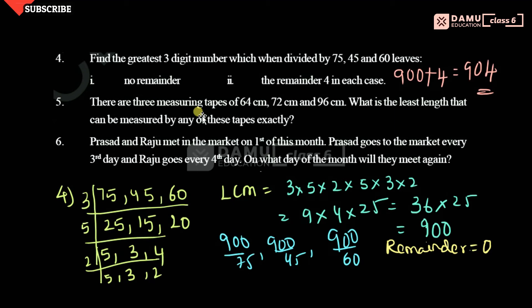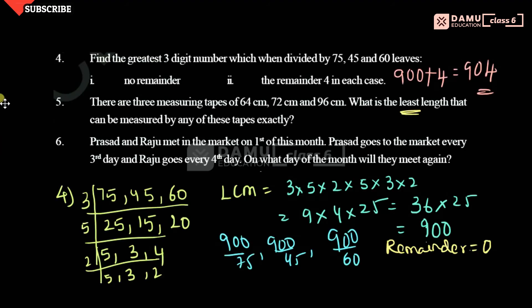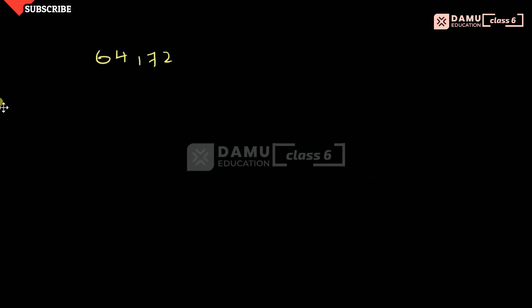Next question: there are 3 measuring tapes of lengths 64, 72 and 96. What is the least length that can be measured exactly by any of these tapes? Since we need the least length, we need to calculate the LCM of 64, 72 and 96.